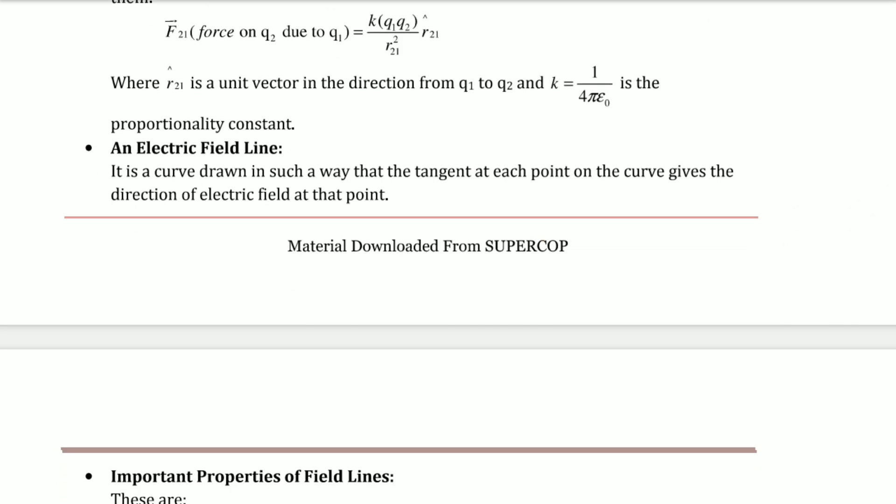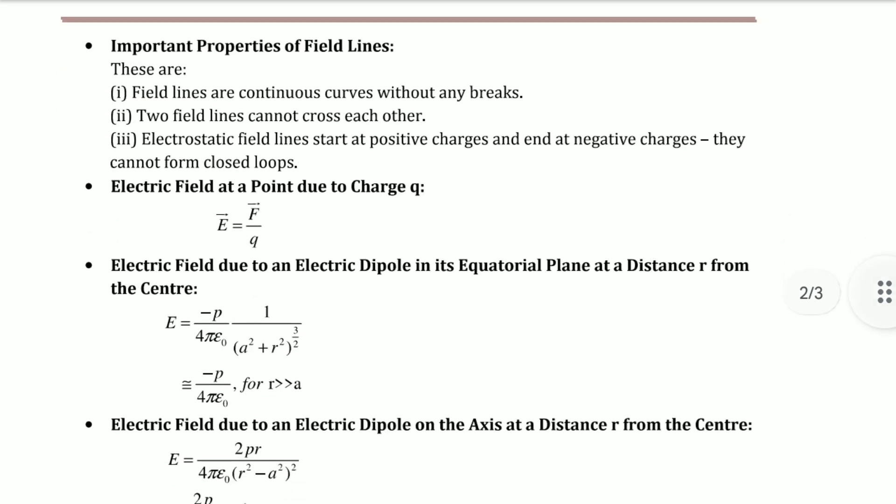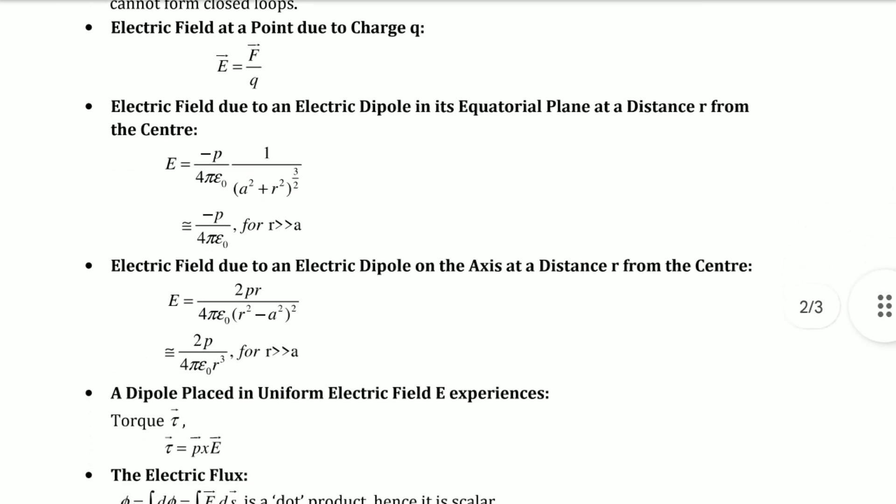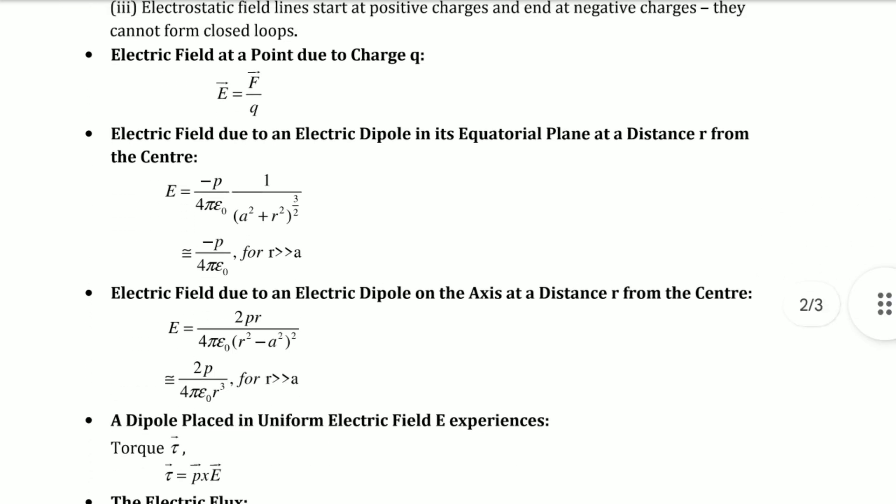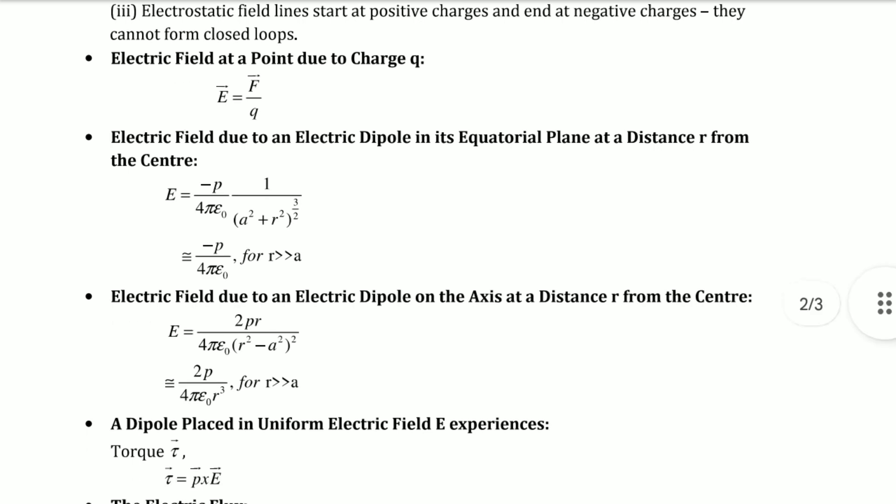Electric field lines are curves drawn such that the tangent at each point gives the direction of electric field at that point. Important properties: Field lines are continuous curves without breaks. Two field lines cannot cross each other. Electrostatic field lines start at positive charges and end at negative charges; they cannot form closed loops. Electric field at a point is E = F/q.